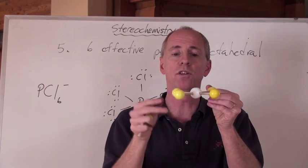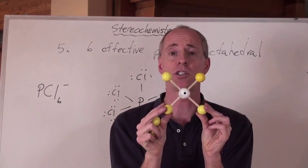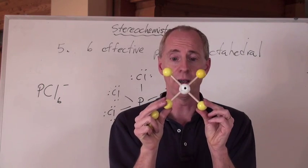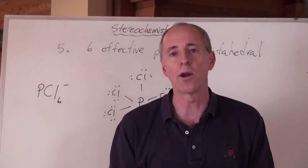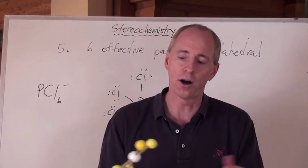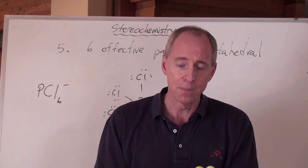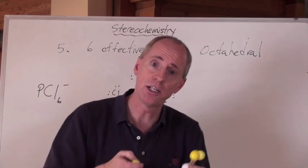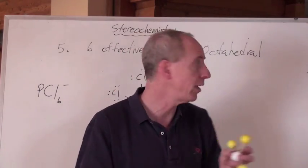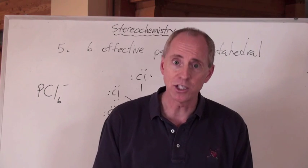Bang, one up top, one down below for lone pairs. And the name of that shape would be a square, but it's in a plane. So it would be called square planar. So those are the names of the shapes, octahedral, square pyramidal, and square planar, that you get out of an octahedral arrangement.